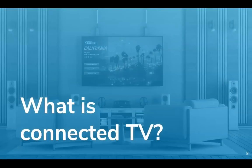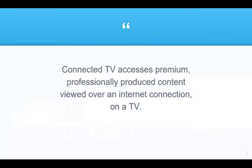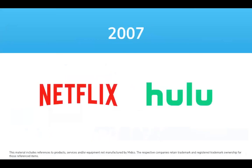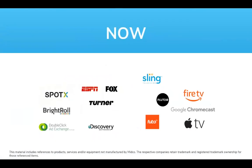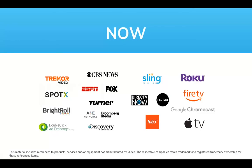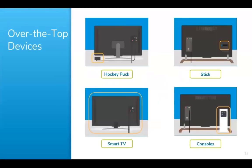What exactly is connected TV? If you have done some preliminary Googling, you've likely discovered that connected TV is when a user accesses premium, professionally produced content via an internet connection on a TV. Streaming platforms started popping up in 2007 when people began adding Netflix and Hulu to their TV subscriptions. Now 10-plus years later, how people stream has evolved and we want instant access to all the ways there are to watch TV. With over-the-top or OTT devices, people can stream with convenience as they switch between platforms, and many of these devices allow users to have the best of both worlds.